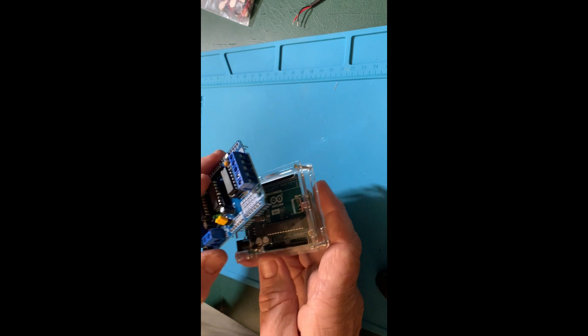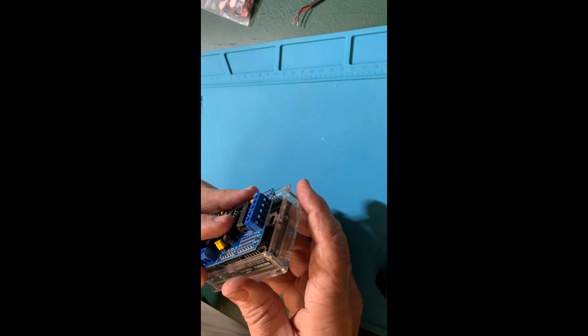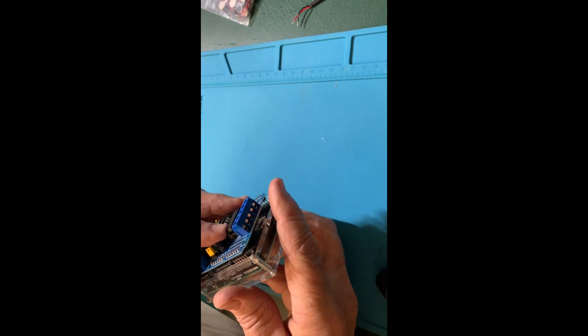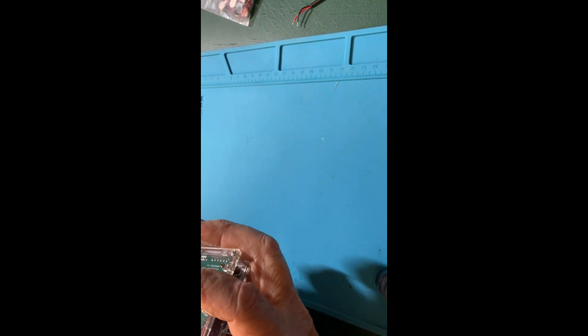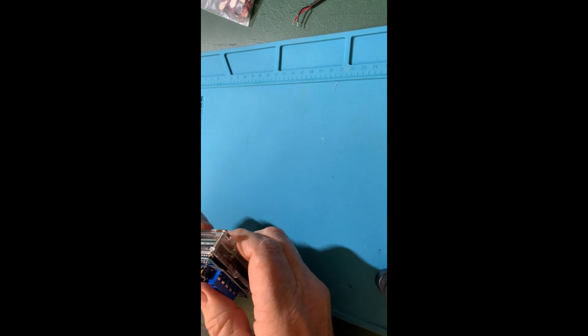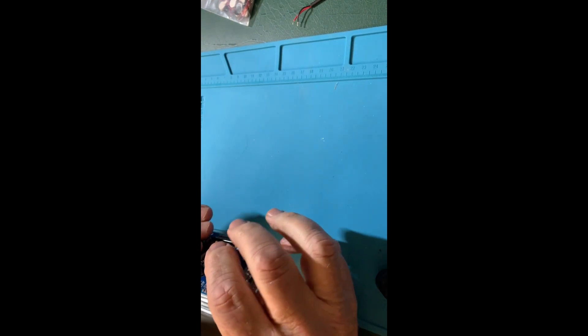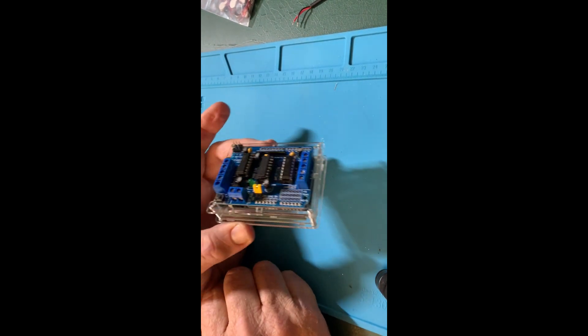We take our motor shield, line the pins up just as we saw before. You'll notice there's an opening in the top of the case that we can get this through and just gently squeeze it together. And we're assembled.